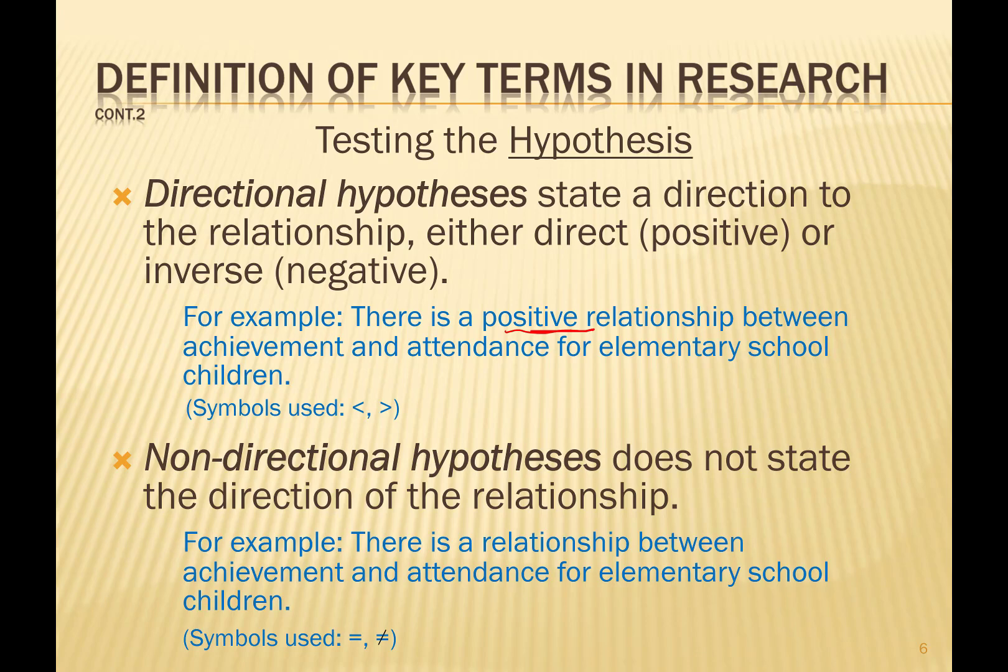There is an overlap or redundancy in doing both, because once we know in a non-directional hypothesis that there is a relationship, we can tell if it's positive or negative just by looking at the numbers. So for the remainder of this discussion, we're going to only focus on the non-directional hypothesis.